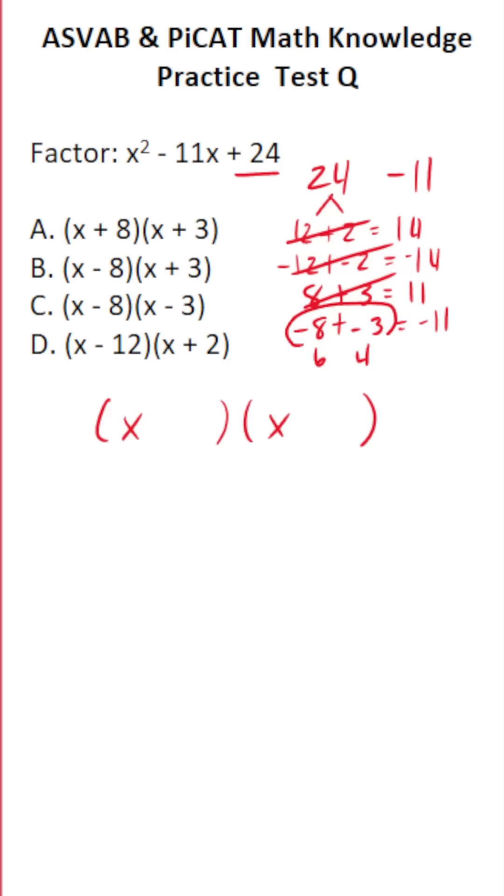Negative 8 and negative 3 multiply to 24 and add to negative 11, so those are the two numbers we're going to put in parentheses here. It'll be minus 8 minus 3. So just like that, we factored this one, and you can see the answer choice is C.